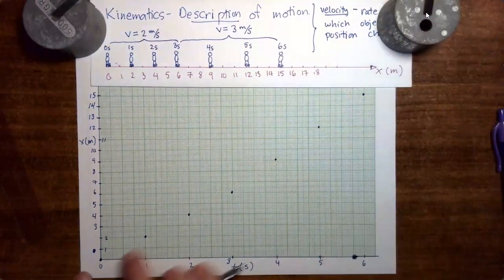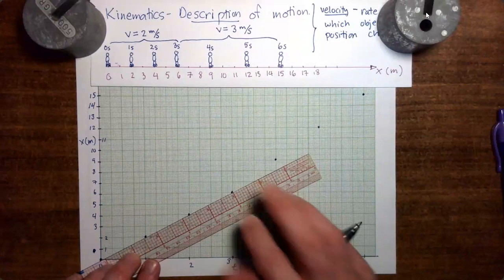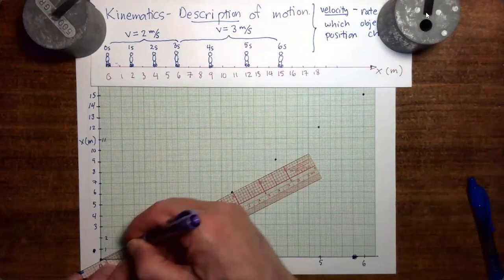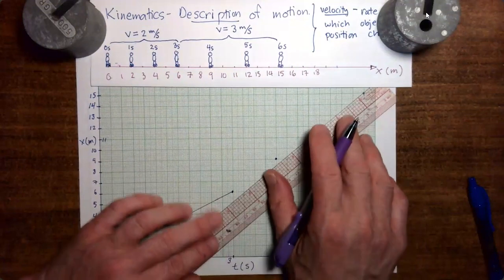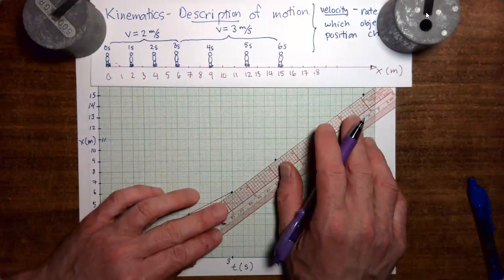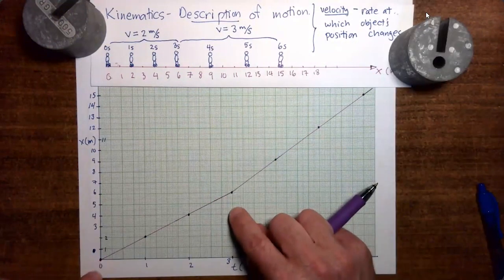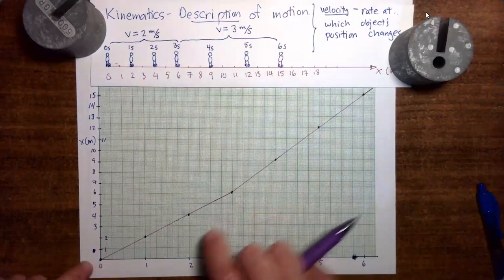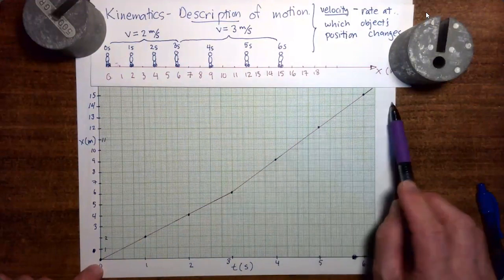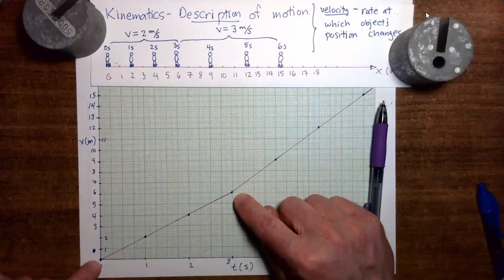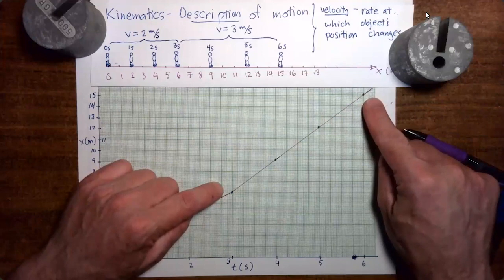Let's connect these points and see what we get. Now, looking at this plot, do you notice that there is a change in the slope of the plot right here at time equals 3 seconds? From 0 seconds to 3 seconds, we have a more gradual slope for the plot. And from 3 seconds to 6 seconds, we have a steeper slope for the plot.